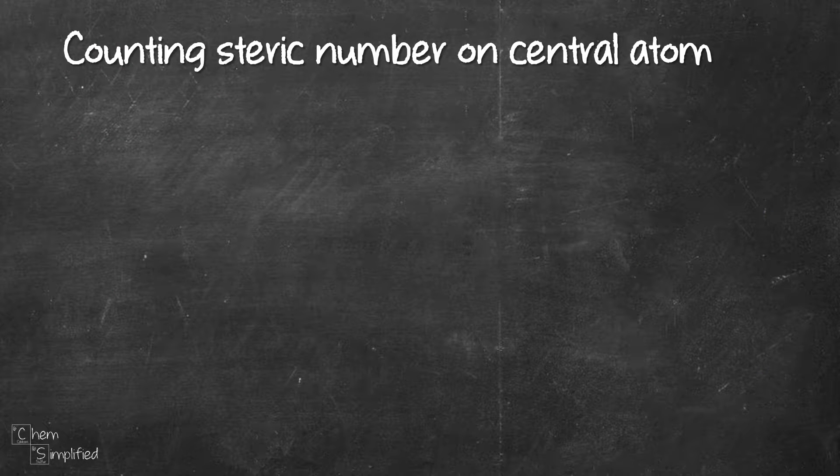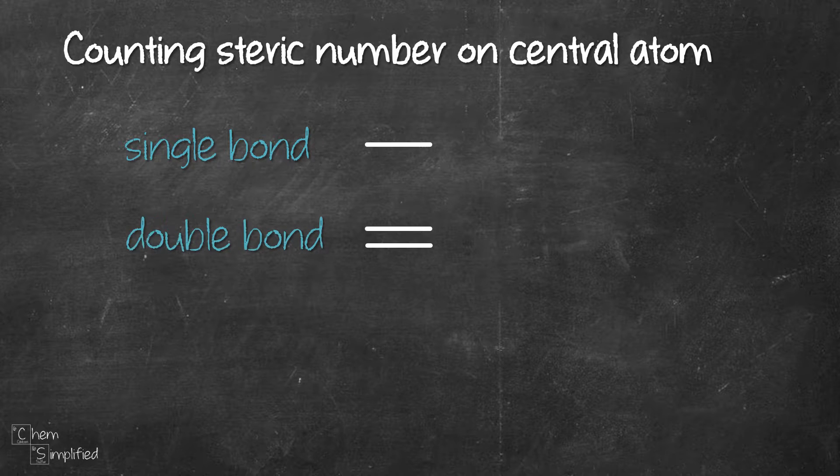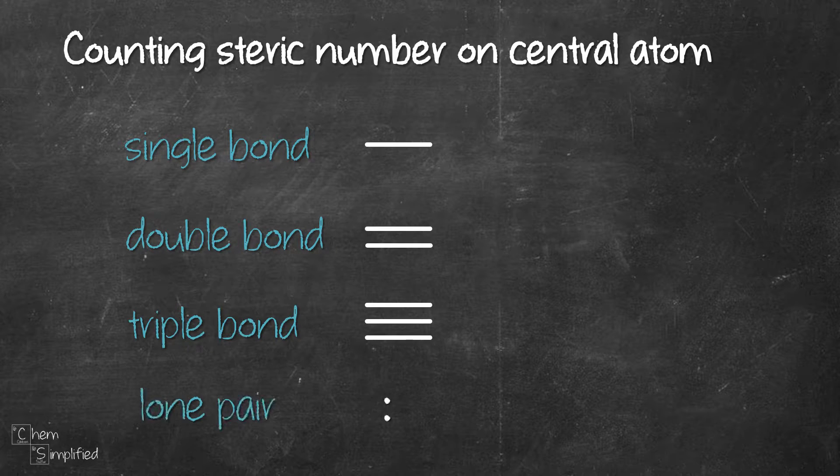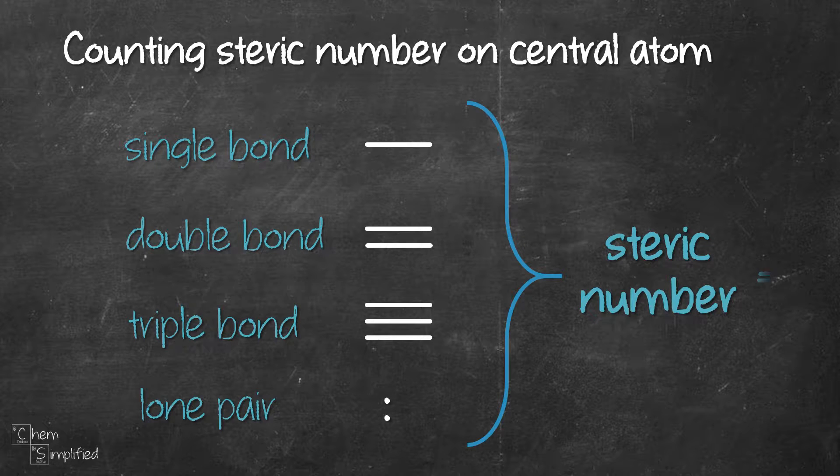Before we start, let's make sure we know how to count the steric number, which is basically the number of groups and lone pairs that surround the central atom. When we encounter single bond, double bond, triple bond, or one lone pair, they are all counted as one group, which means steric number equals one.